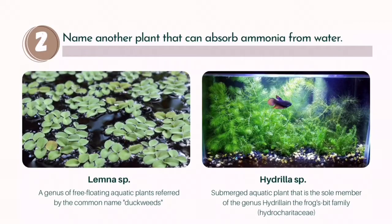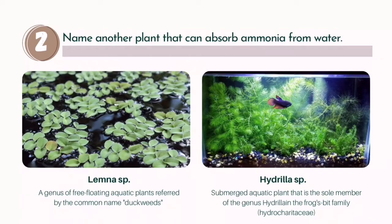Second, name other plants that can absorb ammonia from water. The first one is Lemna species, a genus of free-floating aquatic plants known by the common name duckweed. The second is Hydrilla species, a submerged aquatic plant that is the sole member of the genus Hydrilla in the frogbit family. Both plants can absorb ammonia from water.